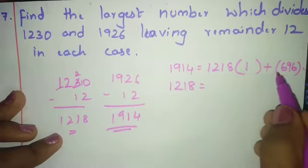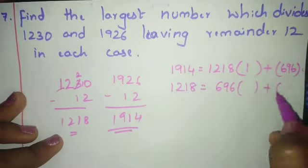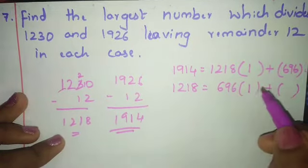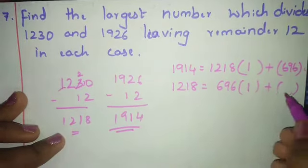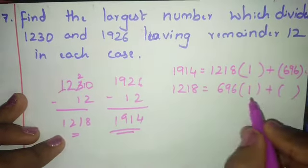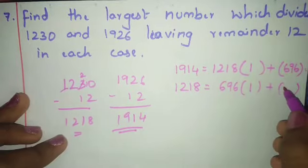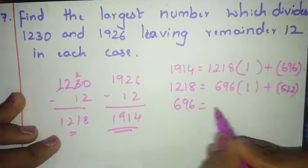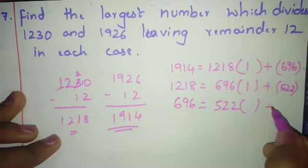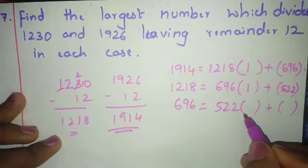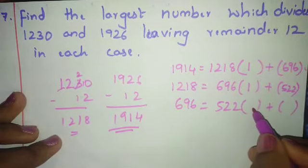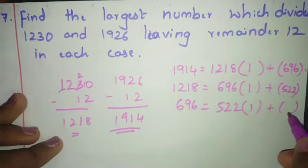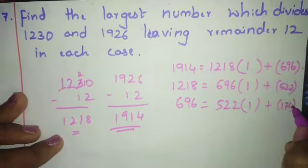Now 1218 = 696 × 1 + 522. Subtracting gives 522. Then 696 = 522 × 1 + 174. Taking one, the remainder is 174.